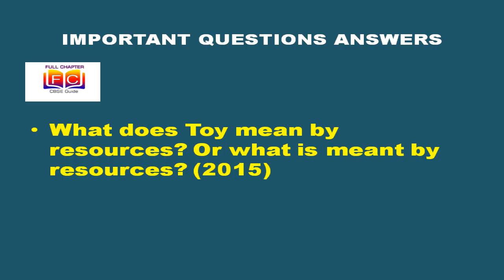Question 1: What is meant by resources? Everything available in our environment which can be used to satisfy our needs is called a resource. It should be technologically accessible, economically feasible, and culturally acceptable. Only then it can be termed as a resource. Examples are minerals, forests, fossil fuels, etc.